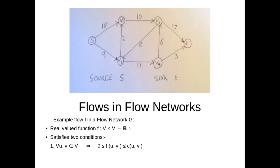And then secondly, for all vertices within the entire subset of vertices V, except the sink and the source, the total flow from U to V must equal the total flow from V to U.